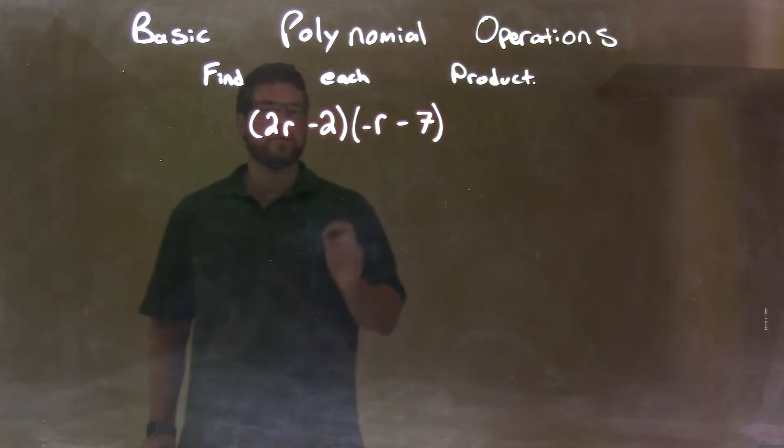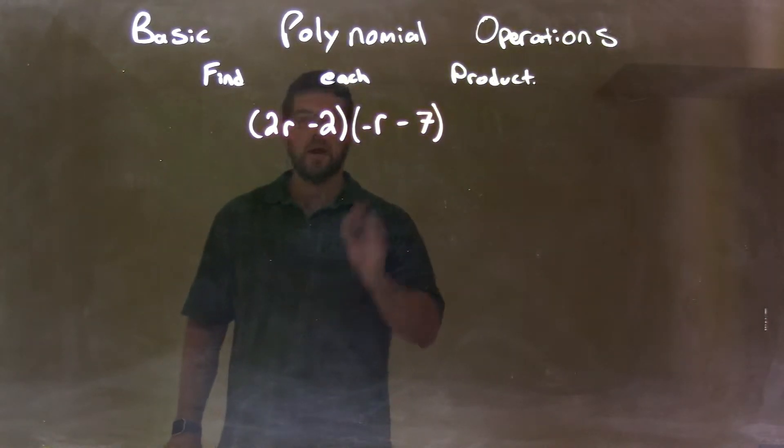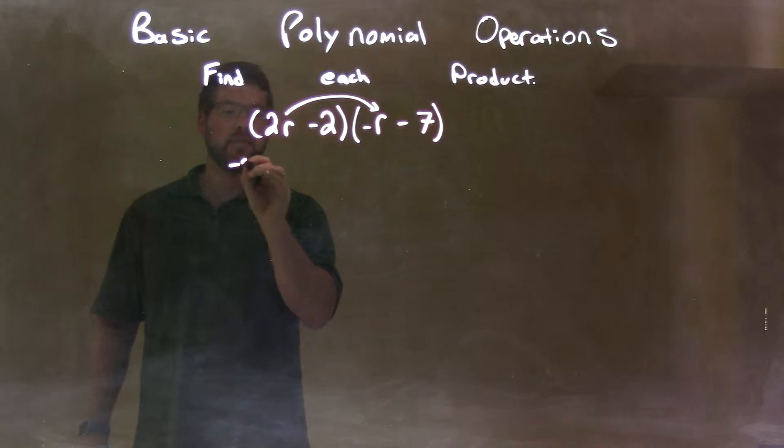What I want to do is multiply all parts of my first parenthesis by all parts of my second parenthesis. So, 2r times negative r is negative 2r squared.